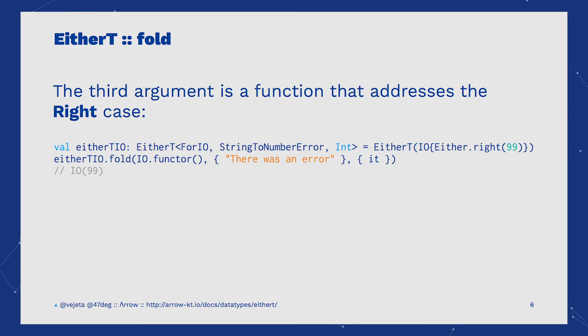The third argument is a function to operate with the right case of the nested Either. In this example, we simply return the value of the right case, if the Either is a right. Since this Either is a right, we will return an I.O. of 99.